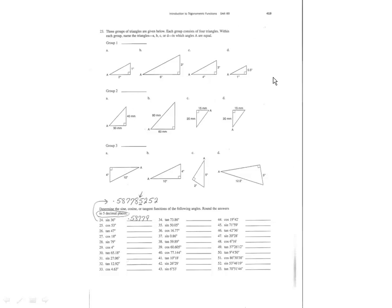We're in unit 60, page 419. Under the first one here, they want to know what sine 36 is — that's no more than hitting sine 36 equals. It says round to five decimal places, so we count them off: one, two, three, four, five. The sixth one is a five, so that means the fifth number — eight — changes to a nine.